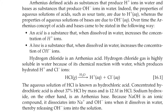Hydrogen chloride is an Arrhenius acid. Hydrogen chloride gas is highly soluble in water because of its chemical reaction with water, which produces hydrated protons and chloride ions. The aqueous solution of hydrochloride, known as hydrochloric acid — concentrated hydrochloric acid is about 37% HCl by mass and 12 molar in hydrochloric acid.